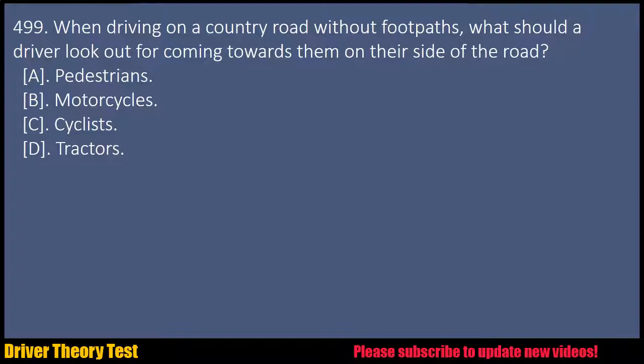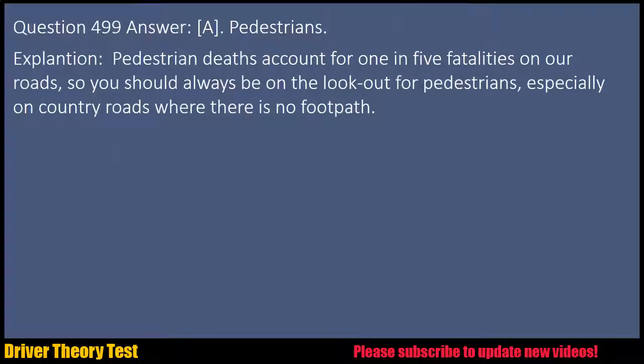Question 499: When driving on a country road without footpaths, what should a driver look out for coming towards them on their side of the road? A. Pedestrians. B. Motorcycles. C. Cyclists. D. Tractors. Answer: A. Pedestrians. Explanation: Pedestrian deaths account for 1 in 5 fatalities on our roads, so you should always be on the lookout for pedestrians, especially on country roads where there is no footpath.